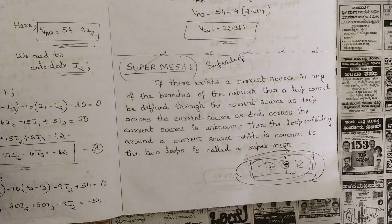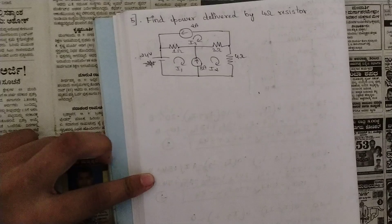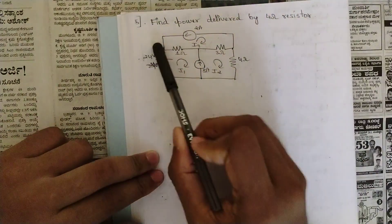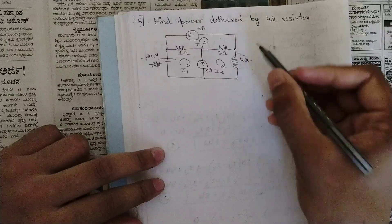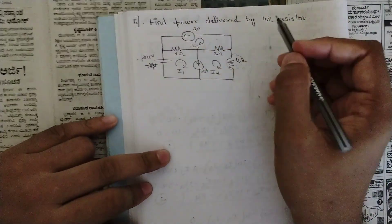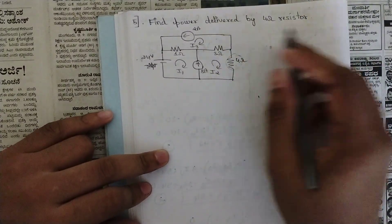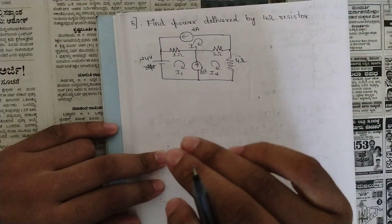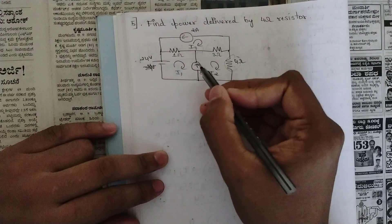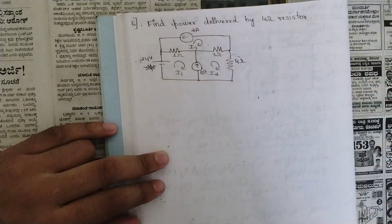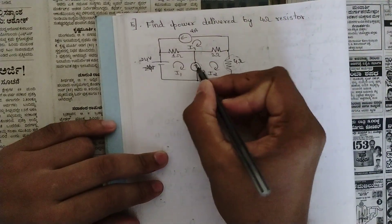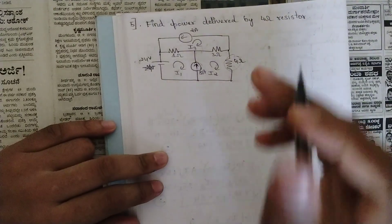Let's solve a problem related to super mesh — Problem 5. Find the power delivered by the 4 ohm resistor. In the circuit, you should first identify it correctly: whenever we have a current source between two loops, apply the concept of super mesh. Here this circuit has one current source between two loops, so we apply super mesh concept.